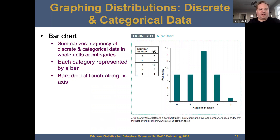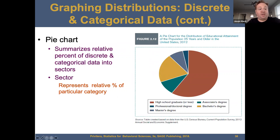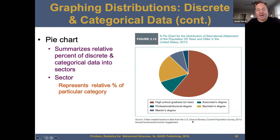We also have bar charts, which summarize the frequency of discrete and categorical data in whole units or categories. Each category is represented by a bar; bars do not touch along the x-axis. For example, a frequency table and a bar chart summarize the average number of naps per day that mothers give children younger than age three. You also have a pie chart, which summarizes relative percent of discrete and categorical data into sectors and represents the relative percentage of each particular category.